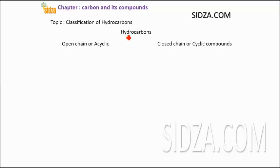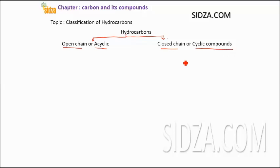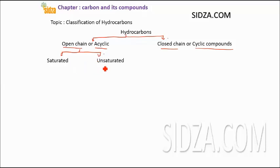Number one is the open chain and second one is closed chain. Open chain hydrocarbons are also called acyclic, and closed chain hydrocarbons are cyclic compounds. Open chain hydrocarbons can further be classified into two main categories: saturated hydrocarbons and unsaturated hydrocarbons.